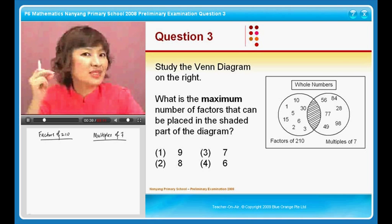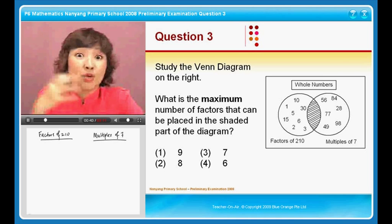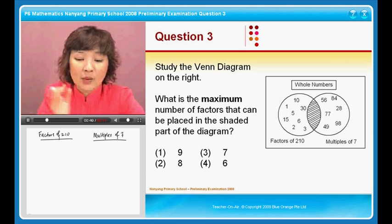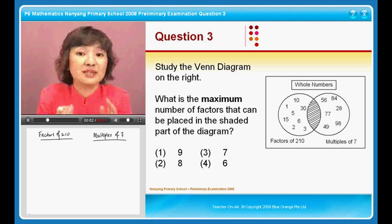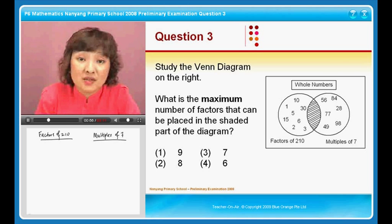Of course, the first one that comes to you is multiples of 7, but I will not choose that because multiples of 7 can go so big and to infinity that I may not even know when to stop. I will look at the list that I can control, limited number of figures. So I will work on factors of 210.